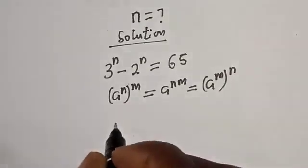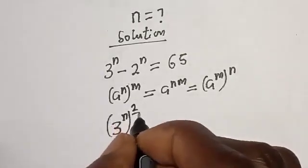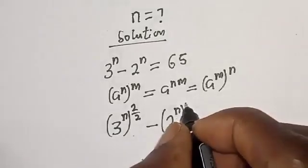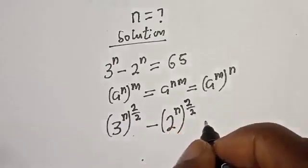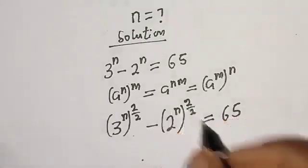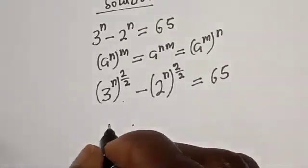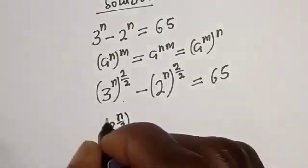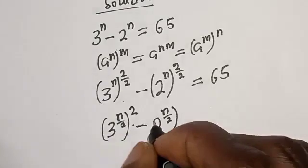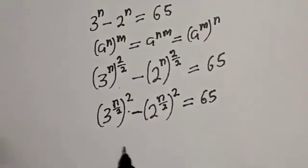For this equation, let's add a trick. We rewrite 3 raised to power n as 3 raised to power (n/2) all squared, minus 2 raised to power (n/2) all squared, equal to 65. This does not change the exponent because 2 divided by 2 gives 1. So this becomes 3 raised to power (n/2) squared minus 2 raised to power (n/2) squared, equal to 65.